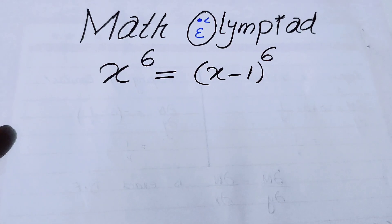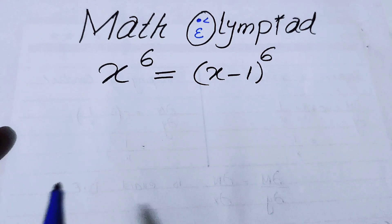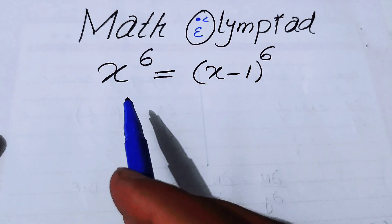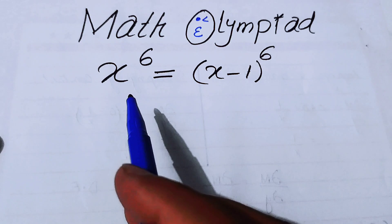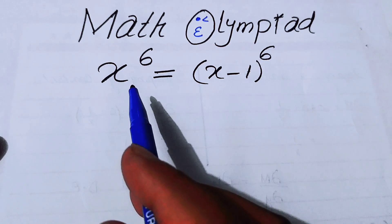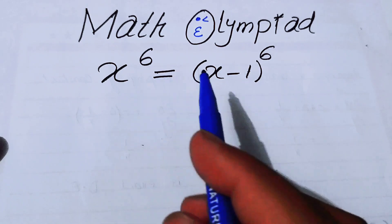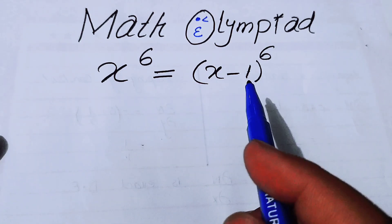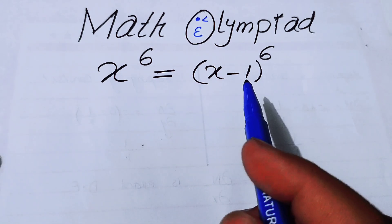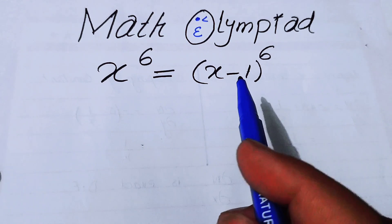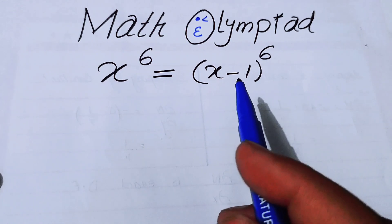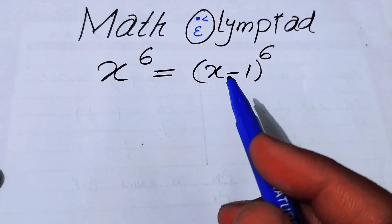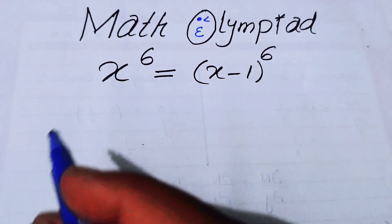Welcome back to the Map of Mathematics. In this video we are going to solve this nice algebra problem: x to the power of 6 is equal to x minus 1 to the power of 6, and we will solve this problem for the value of x.